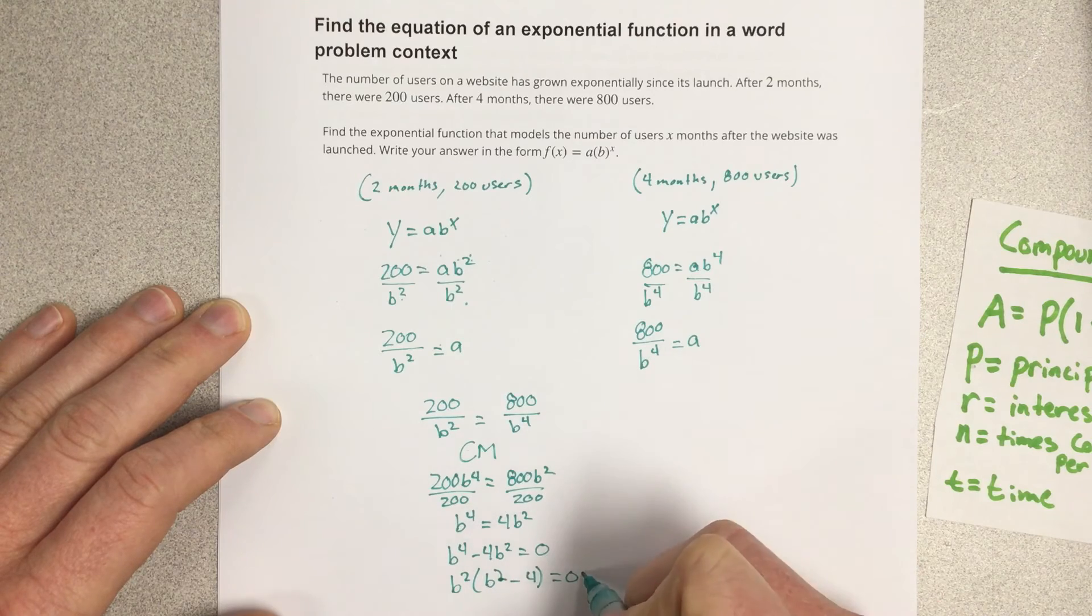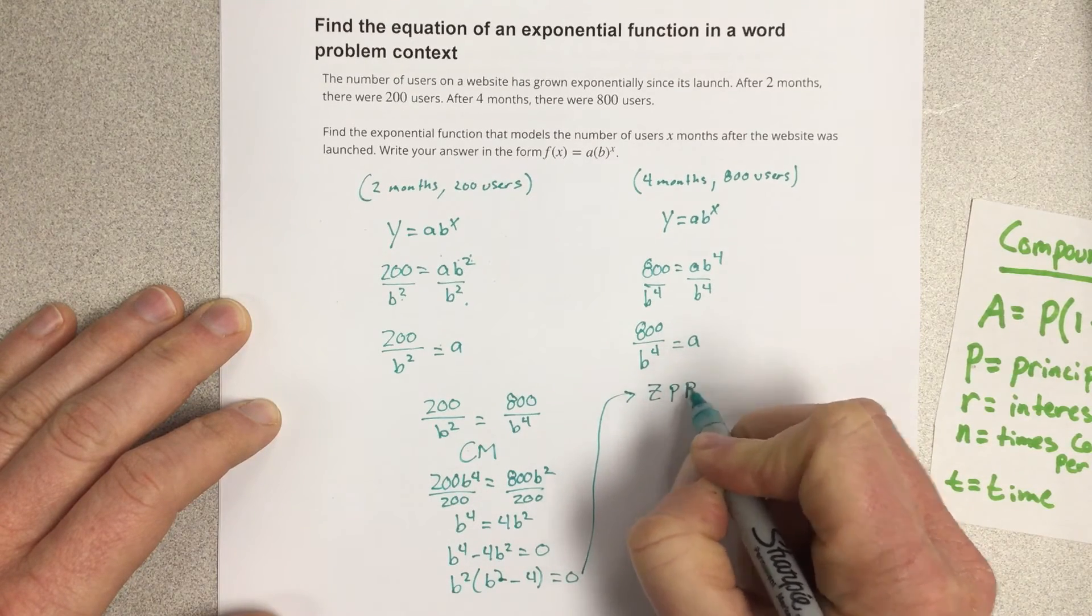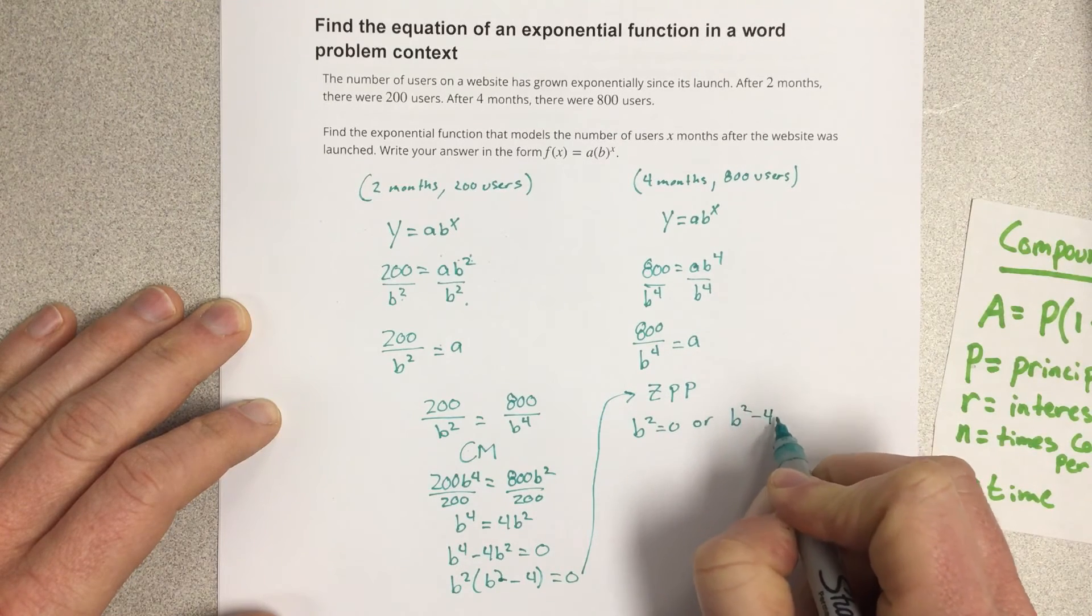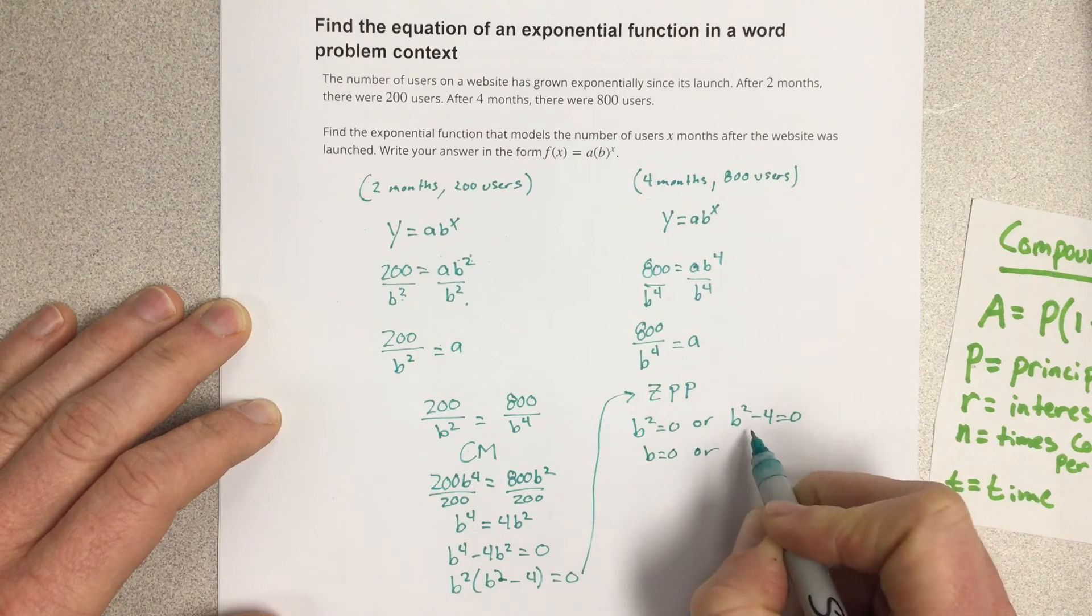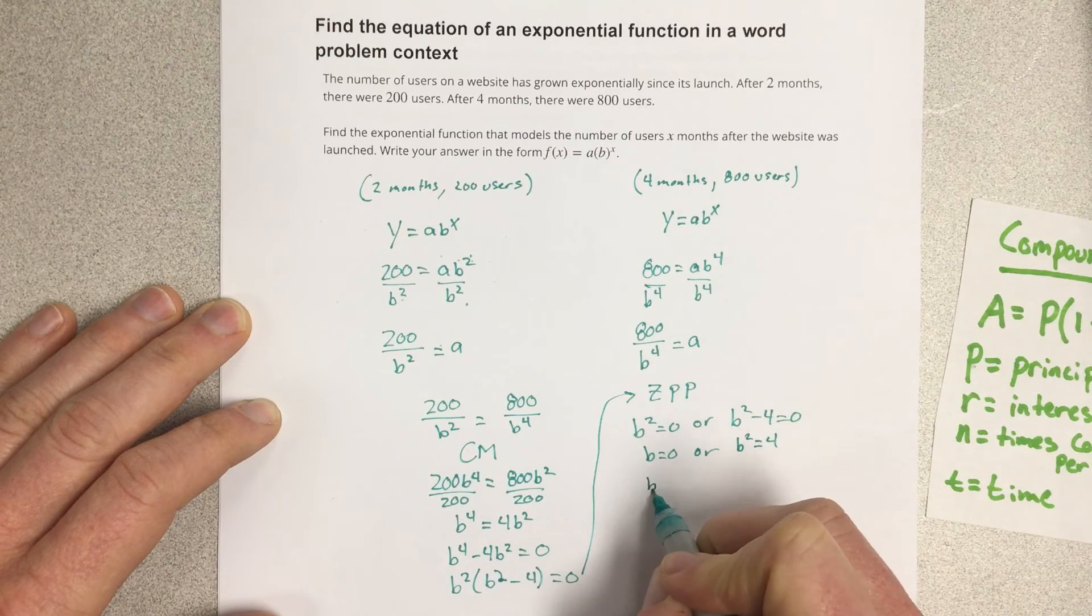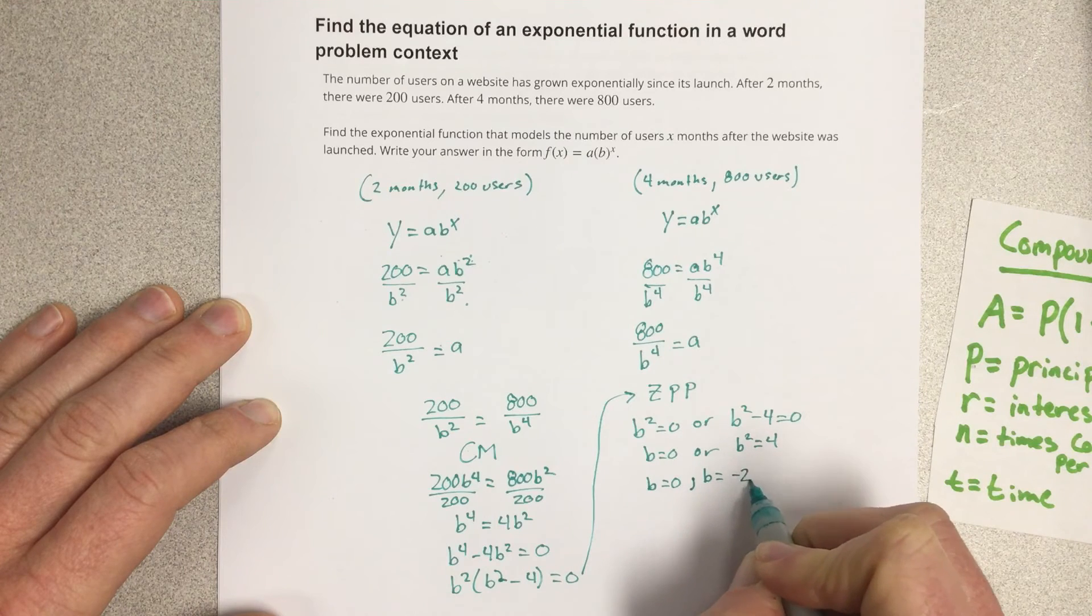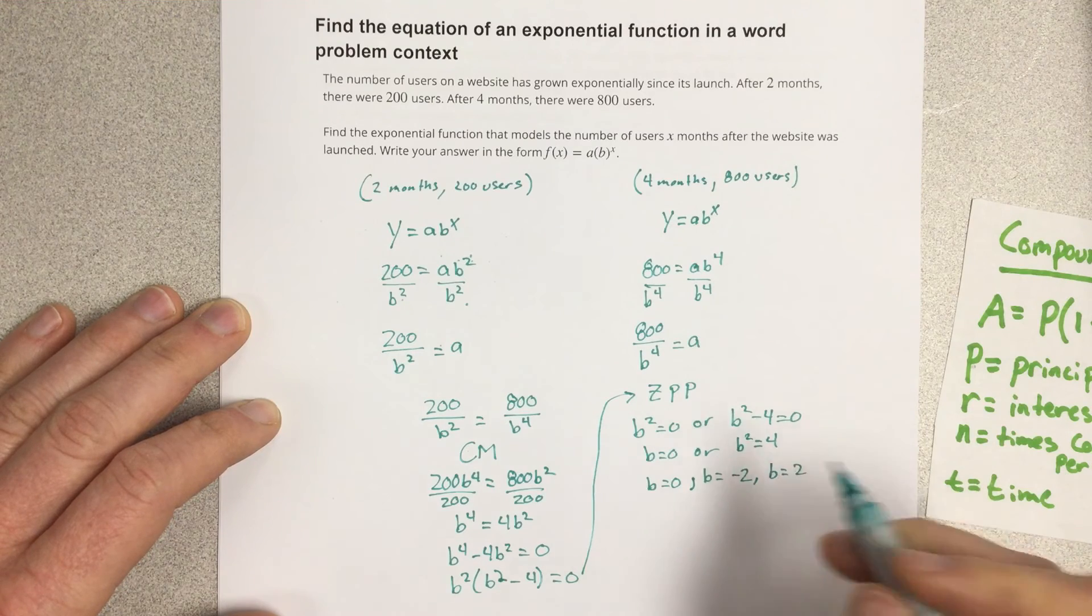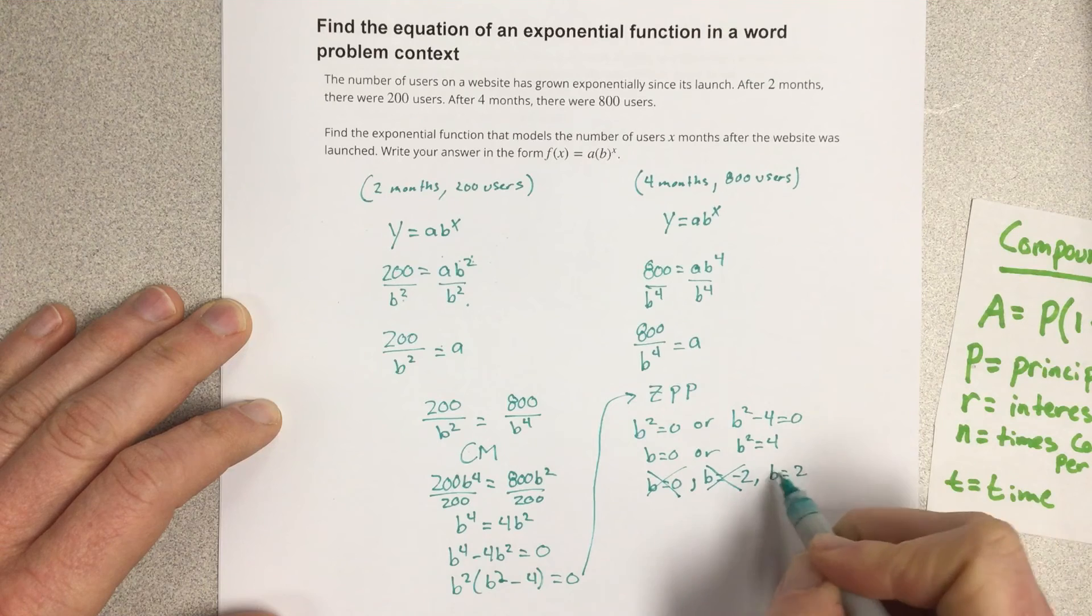We're going to go with zero product property. So b squared equals zero or b squared minus 4 equals zero. So b equals zero or b squared equals 4. So then we have b equals zero, b equals negative 2, and b equals 2 when we square root this. Now remember b has to be greater than zero, so that doesn't work and that doesn't work. So our b value is 2.